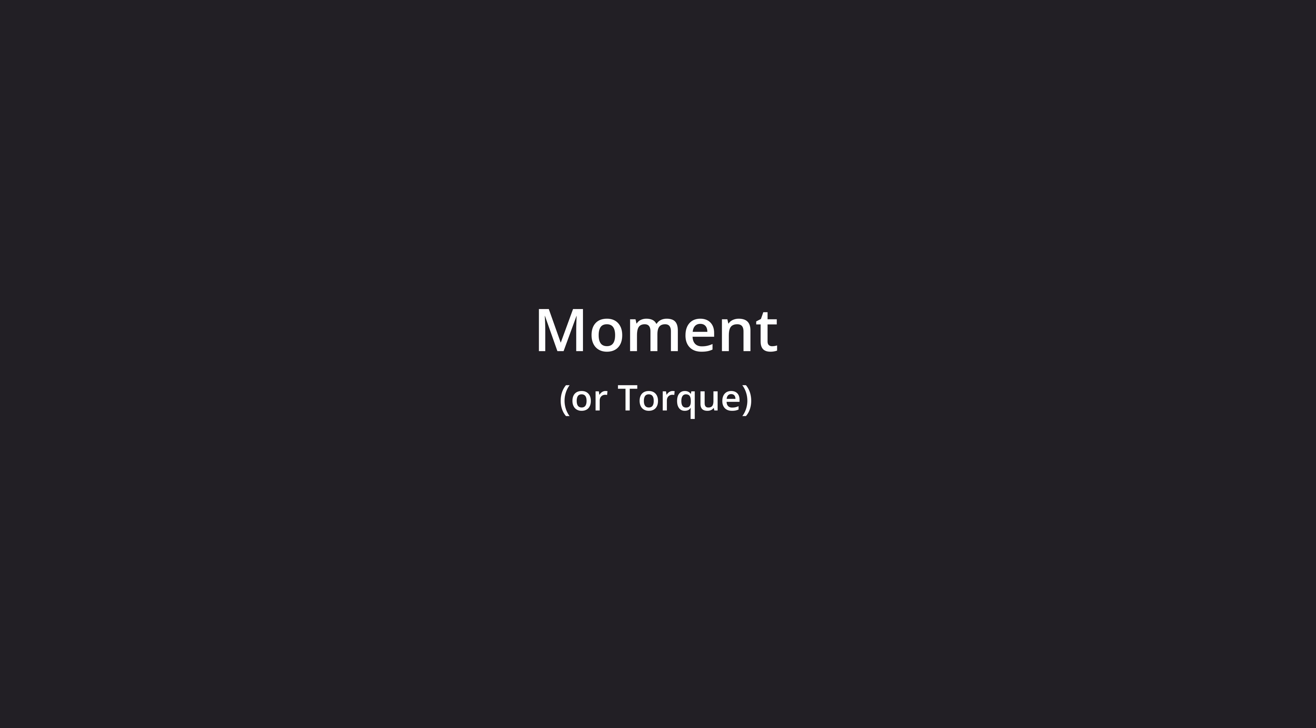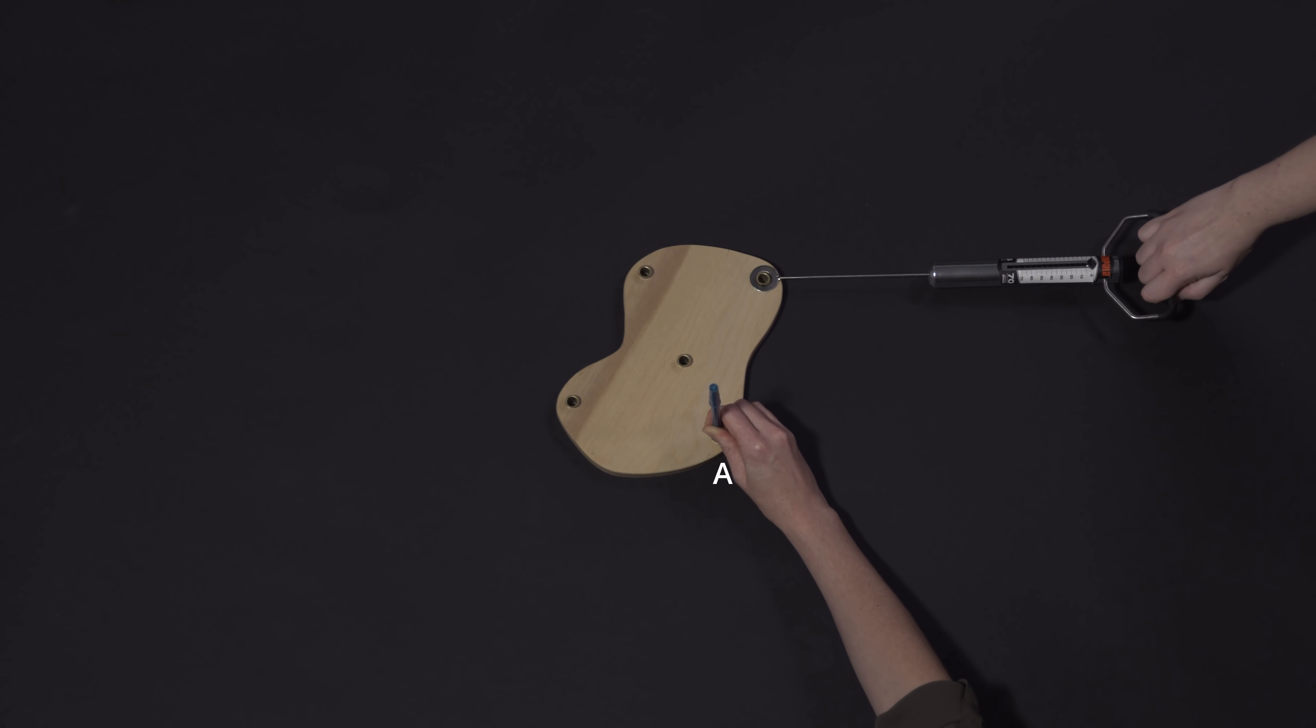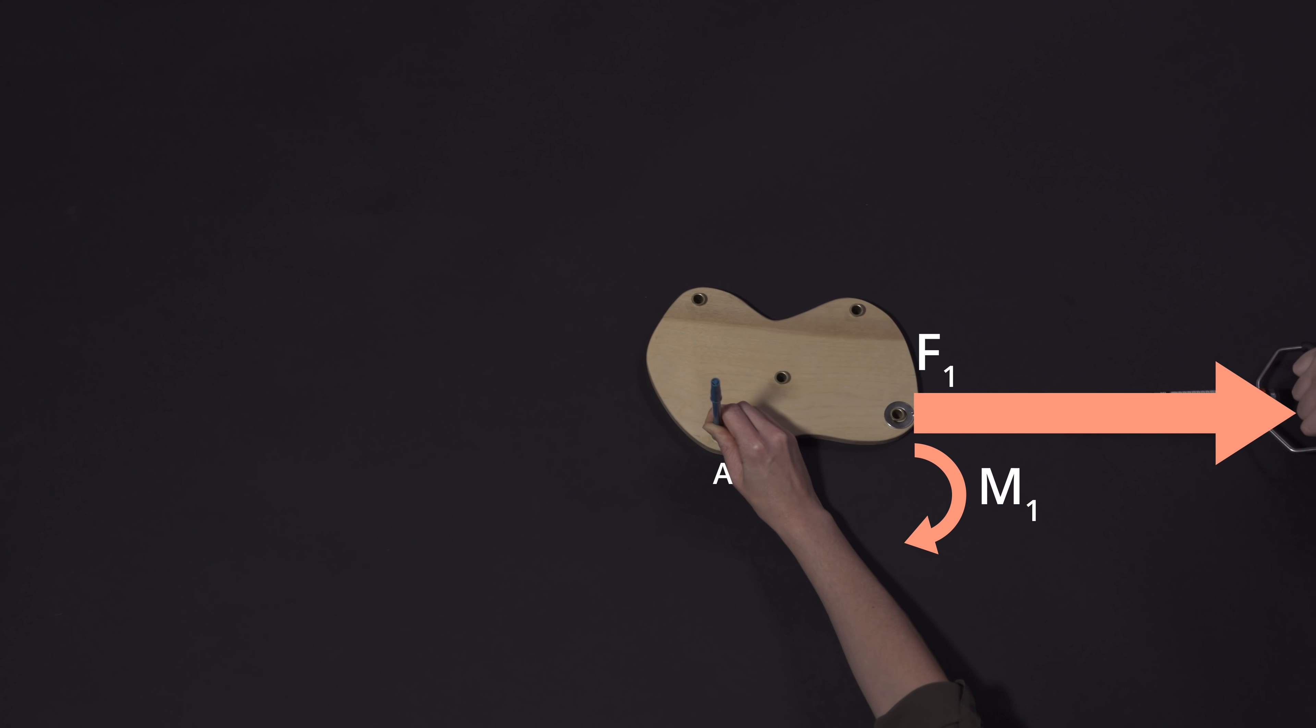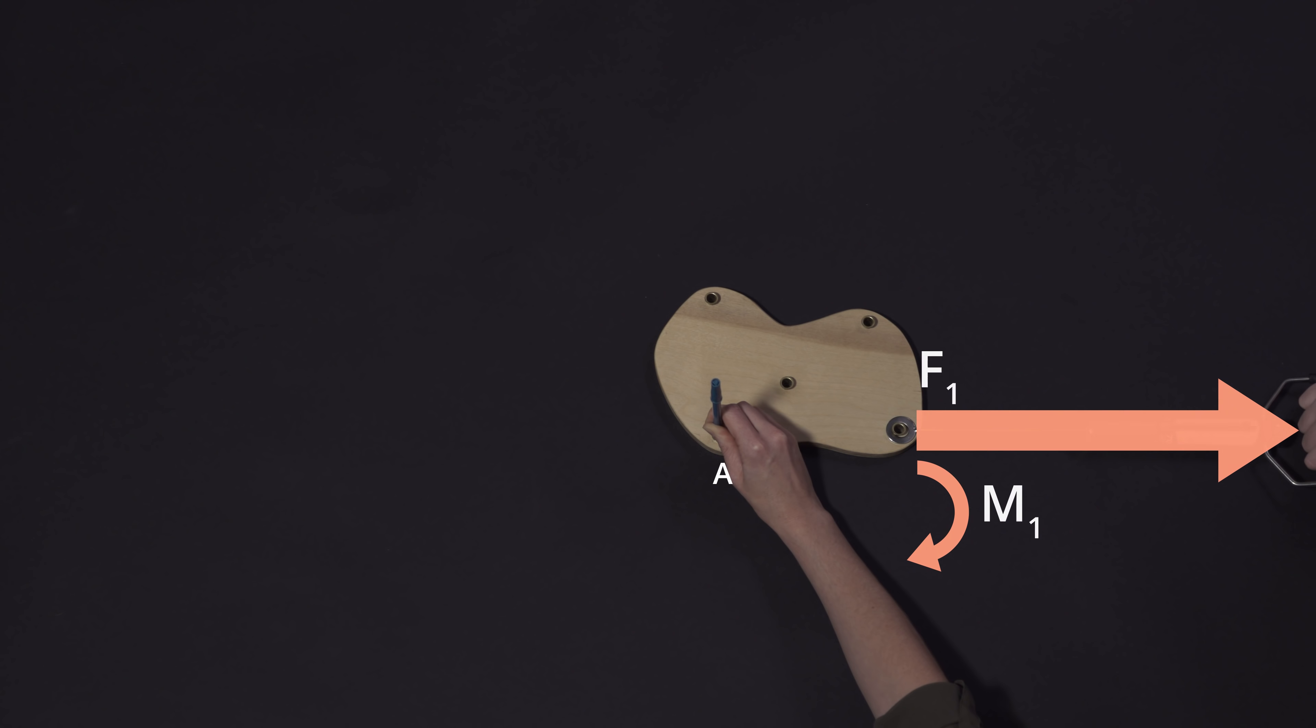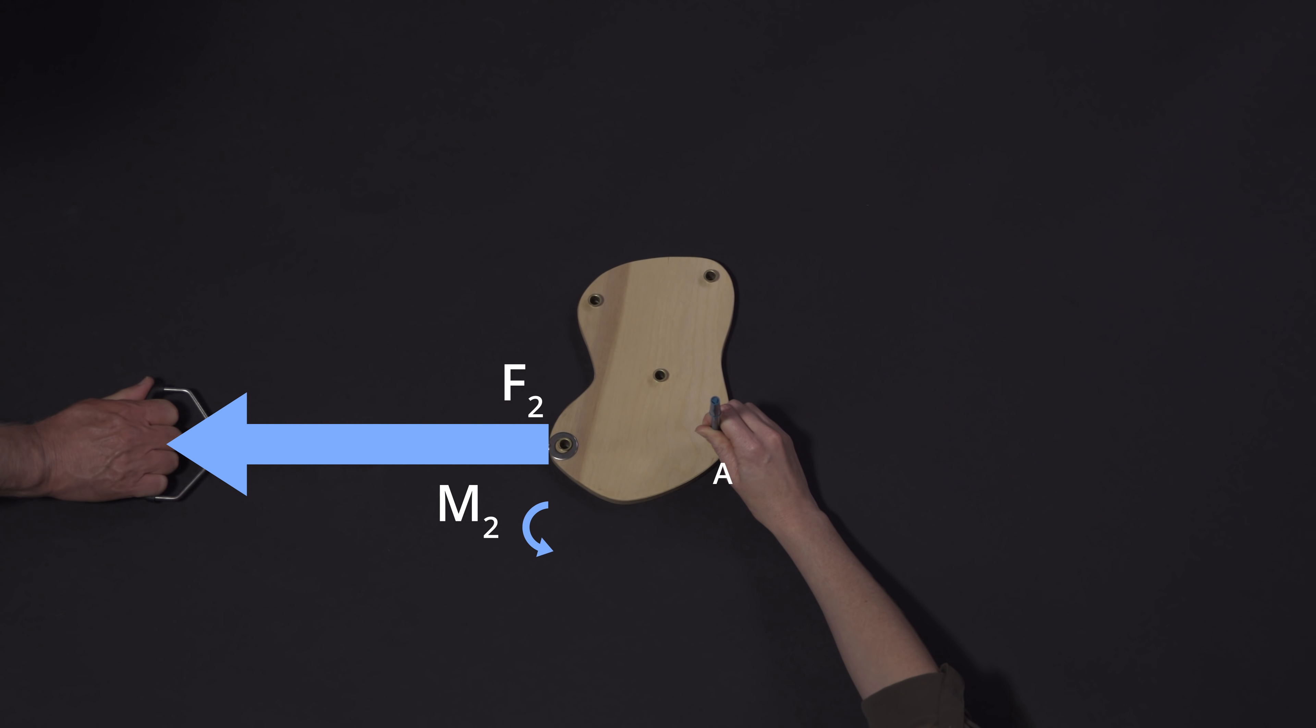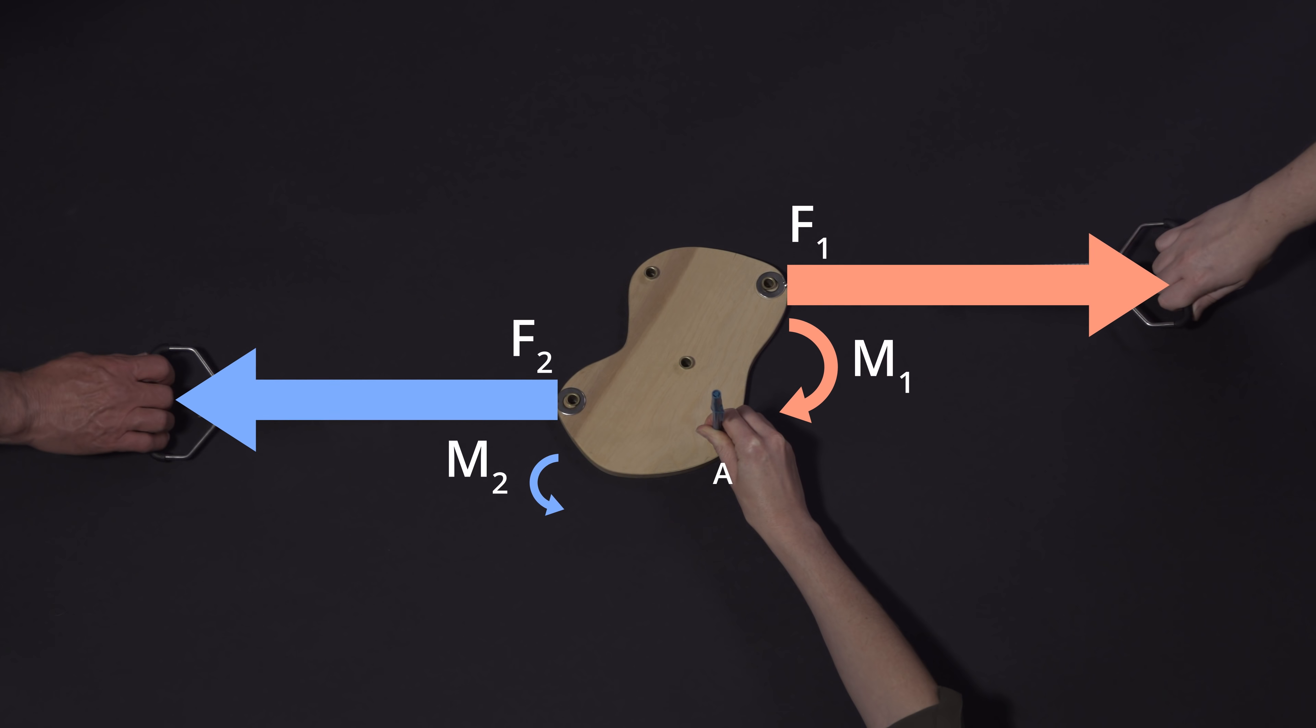To explain how forces can produce rotations, we need to introduce the idea of a moment or a torque. Suppose we fix a point A on the model so that it cannot move. If we apply just the force F1, it will cause the wood shape to rotate clockwise about A. The force F2 would also generate a moment about A, but that moment would be smaller and counterclockwise. When the two forces act together, they produce a net clockwise moment.